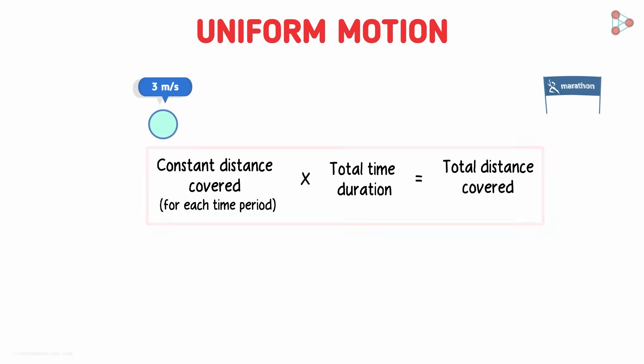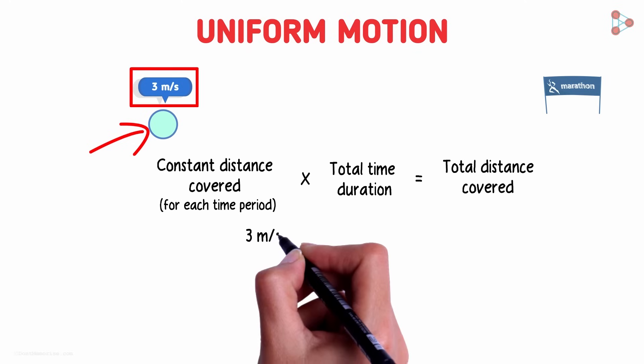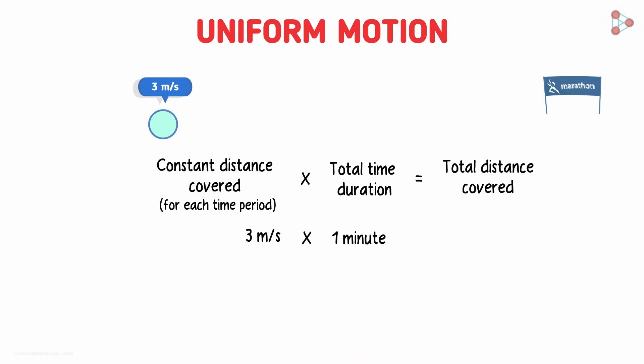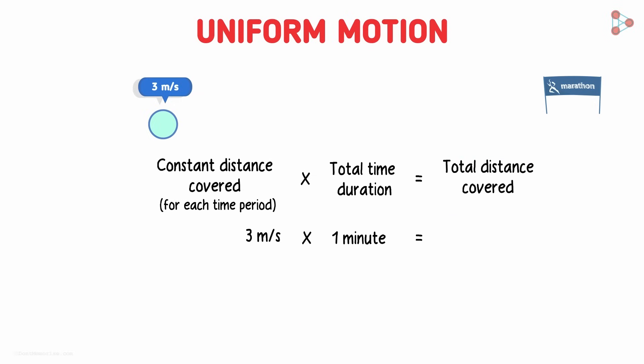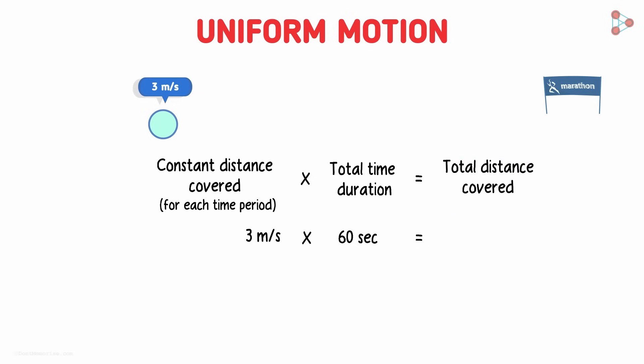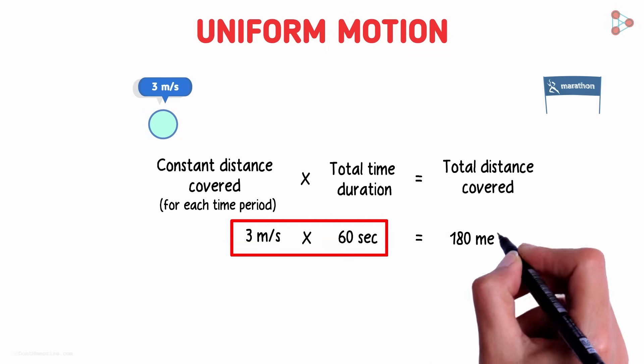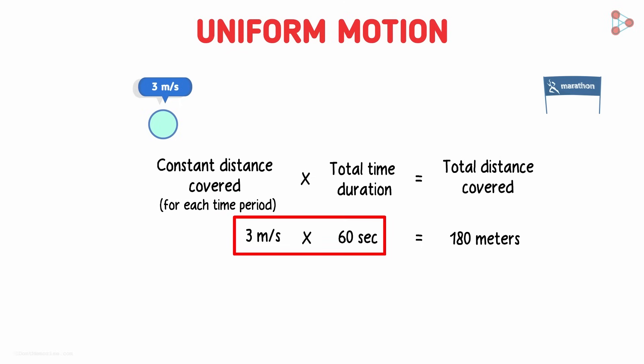What do I mean by this? If I said this man ran at a uniform speed of 3 meters per second for a minute, can you tell me how much distance he covered? A minute is 60 seconds. Each second the runner covered 3 meters. So 60 times 3 is 180. Don't forget the units, the answer would be 180 meters.